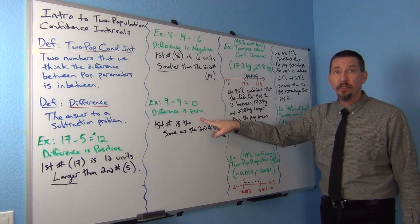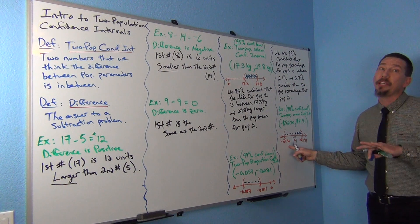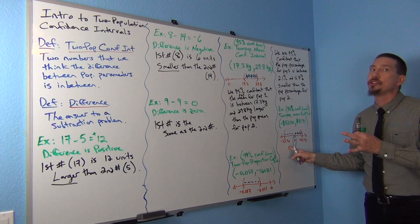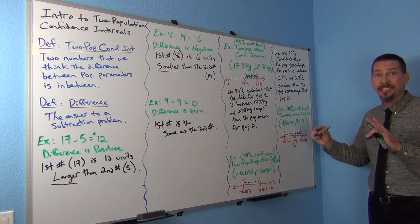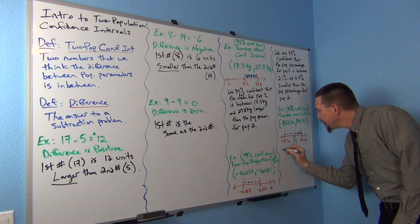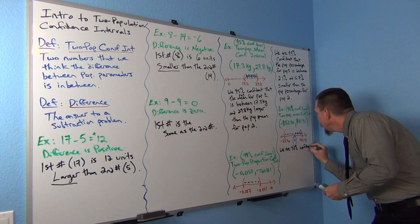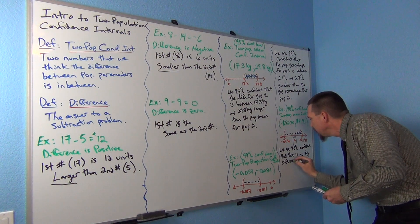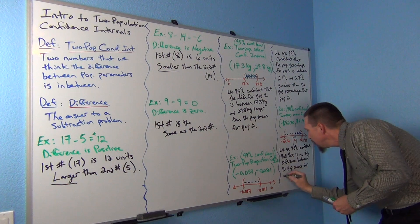Zero is in the interval. What did we say when the difference was zero? That tells us the two numbers are the same. So this is actually telling us that population one and population two are not significantly different. I can't be sure they're exactly the same, but I can say they're not really significantly different — we can't really tell. When you get a negative-positive confidence interval, that's telling you the populations are so close you cannot tell which one is bigger, and that happens a lot in real life. We are 90% confident that there is no significant difference between the population means for population one and population two.